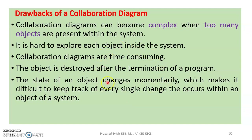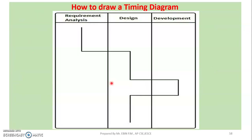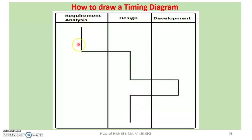Those are the drawbacks of the Collaboration Diagram. The last diagram is the Timing Diagram. One example involves requirement analysis, design, and development — three phases in which software is created: first requirement analysis, then design, and finally development.